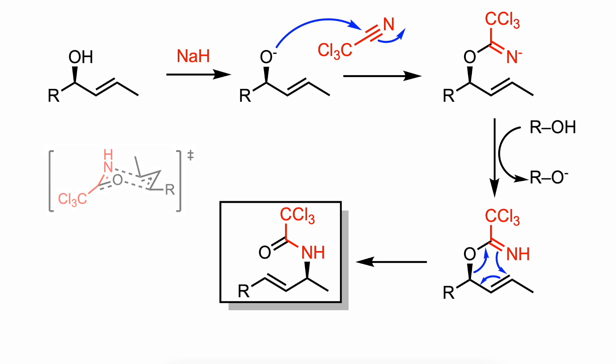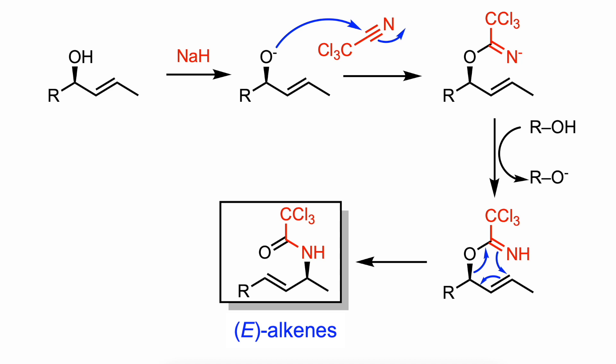Moreover, the formation of the amide functionality is the driving force that makes the reaction irreversible. Besides, the rearrangement of trichloroacetimidates derived from secondary allylic alcohols proceeds with a high level of stereoselectivity, and preferentially the E-alkenes are formed.